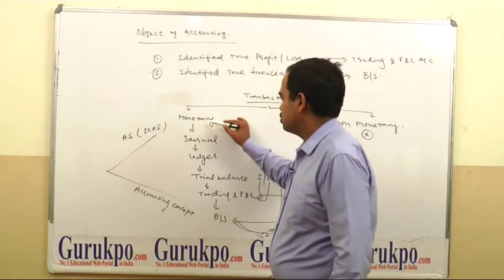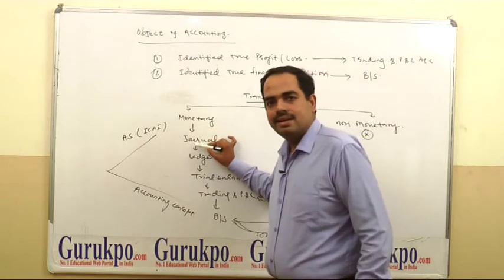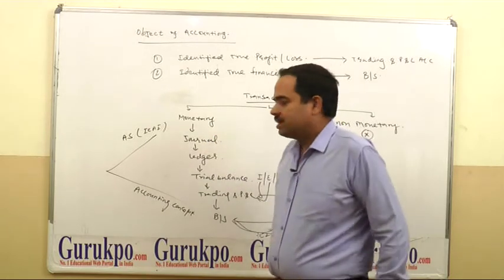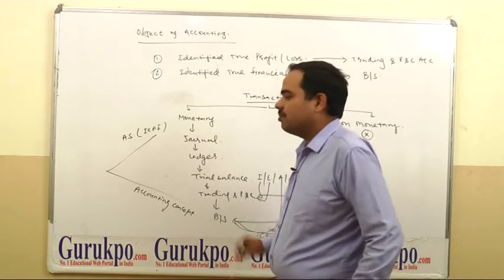Monetary transactions are first of all recorded in a primary book known as journal. After preparing journal, the next process of accounting is ledger. Ledger means opening of account.